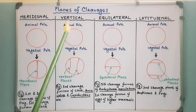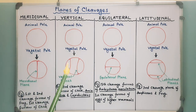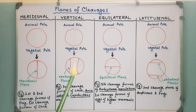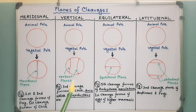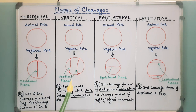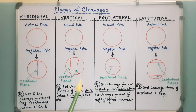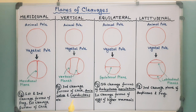Vertical plane: here the cleavage furrow tends to pass in a direction from the animal pole towards the vegetal pole. But unlike the meridional plane, it does not pass through the median axis of the egg; rather, it courses to one side of this axis. For example, the third cleavage furrows of Amia calva, Lepidosteus osseus, and chick, etc.